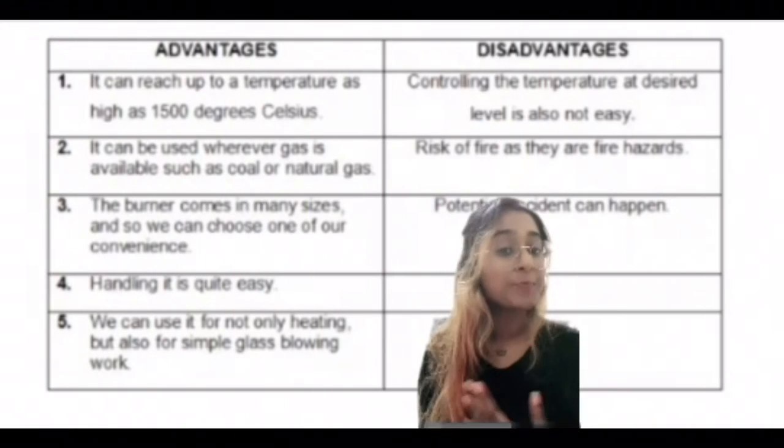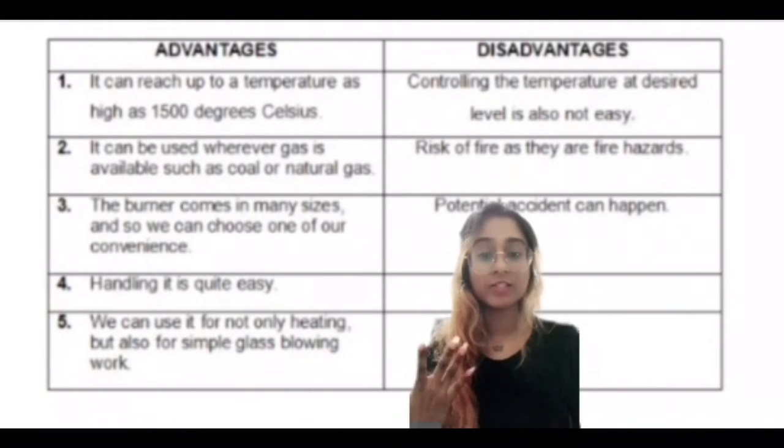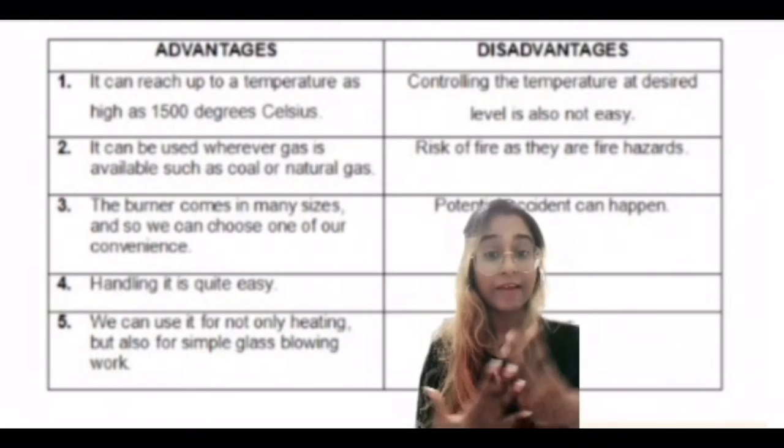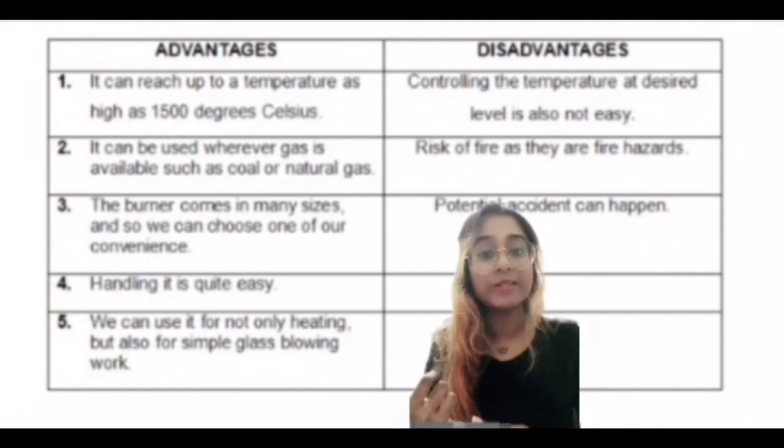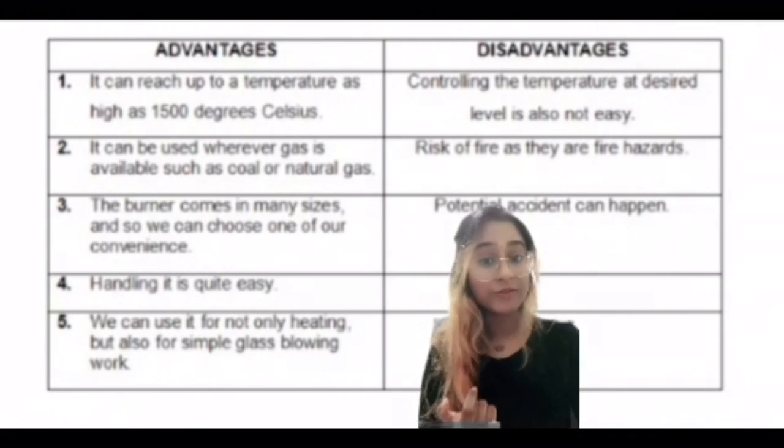Finally, let's take a look at the advantages and disadvantages of using a Bunsen burner. The Bunsen burner has many more advantages than disadvantages when it comes to its uses. The advantages are that it can reach up to a temperature as high as 1,500 degrees Celsius.